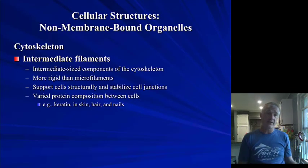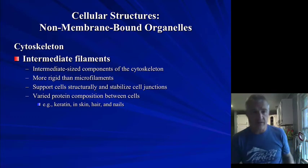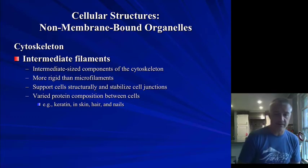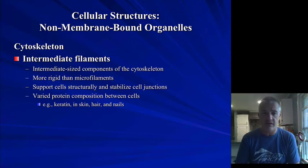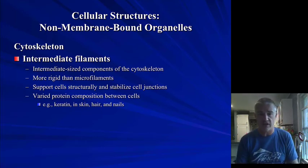Intermediate filaments are obviously the ones in the middle. They're more rigid than microfilaments. This helps stabilize the cell junctions as well as hold the cell's shape a little bit more.